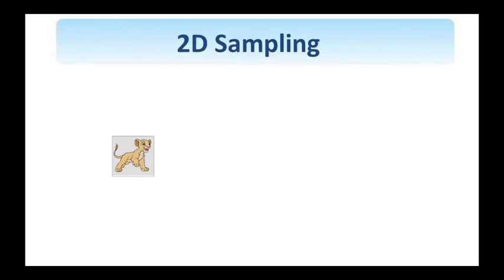One of the important concepts in digital signal processing is the concept of sampling — it connects the analog to the discrete world. With the proliferation of digital sensors, there is less need for converting an analog image to a digital one, but the mathematical concepts of sampling are important for understanding other topics in image and video processing, for example, in understanding the steps needed when changing the sampling rate in the digital domain, such as when we up-sample or down-sample an image.